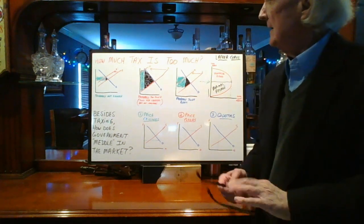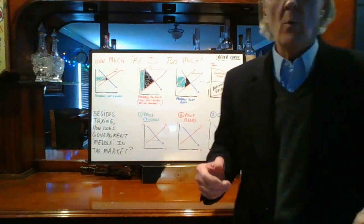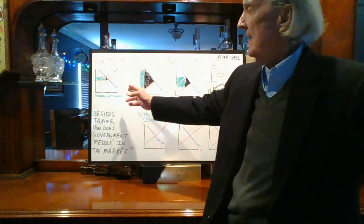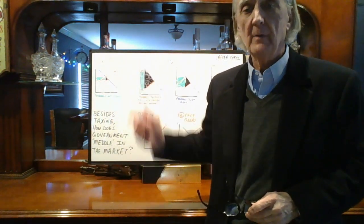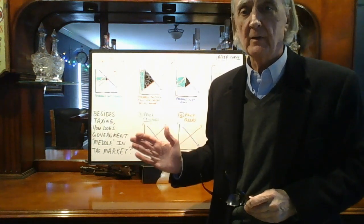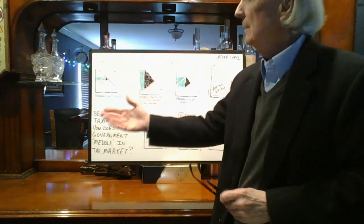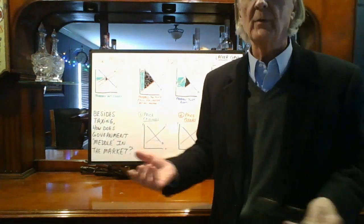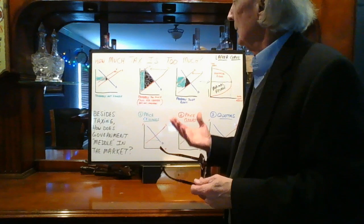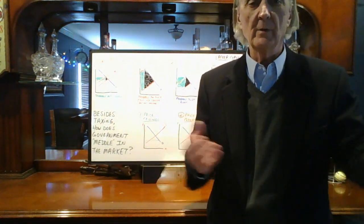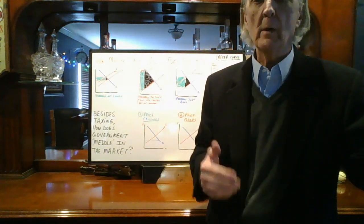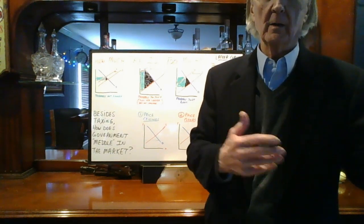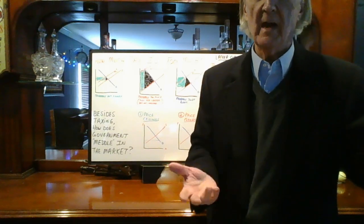The more vertical whether it's the supply or demand curve is, the more inelastic. The more horizontal — meaning it's moving left or right — the more elastic. The rule of thumb is: whoever has the more inelastic curve, whether supplier or demander, will bear more of the tax incidence — the tax burden.